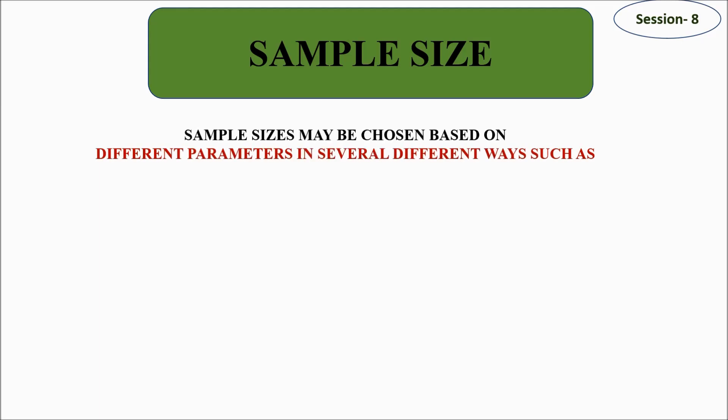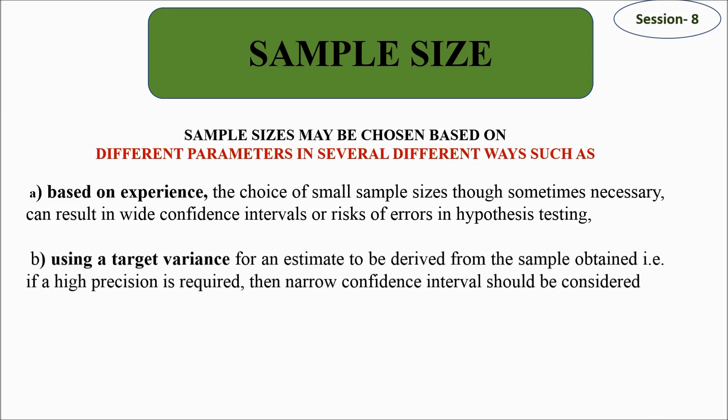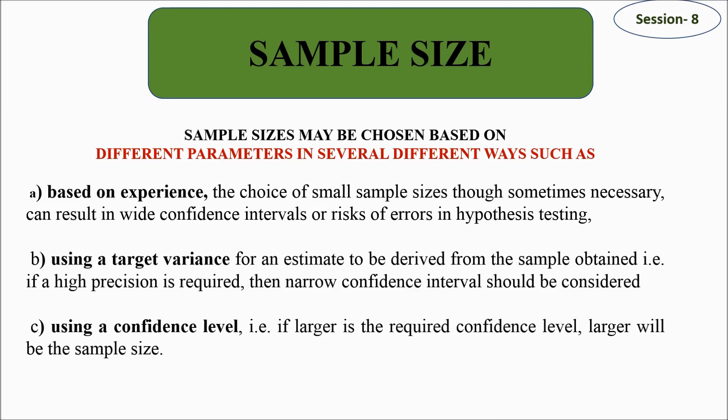Sample size may be chosen based on different parameters in several ways. First, based on experience — we can assess the intervals or risks of errors in hypothesis testing. Second, using a target variance for an estimate derived from the sample; if high precision is required, then the confidence interval is narrowed. Third, based on the confidence level — if a larger confidence level is required, then larger will be the sample size. There is a direct correlation between sample size and confidence level.